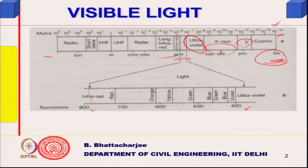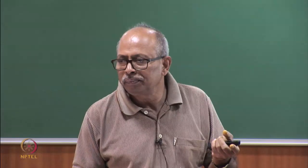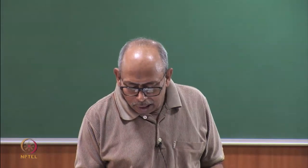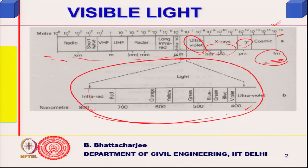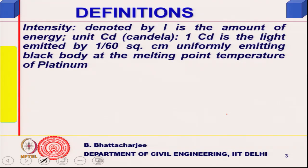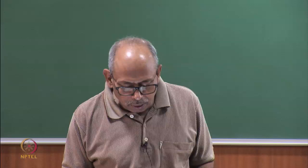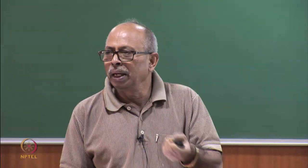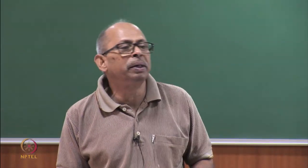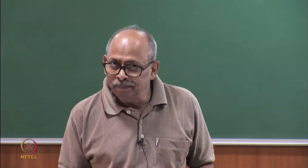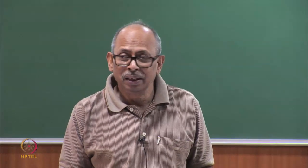Beyond visible light, there is infrared radiation — the heat radiations we discussed earlier — and then radar, ultra-high frequency, very-high frequency, and short-wave radio waves. The visible light band is a very small portion of the spectrum, and the sun emits this in sufficient quantity for lighting and visual comfort and performance.